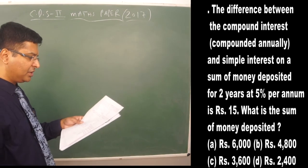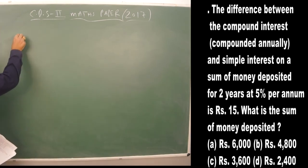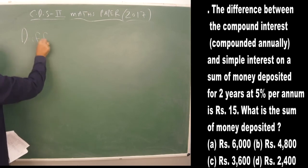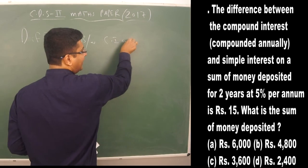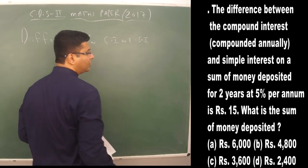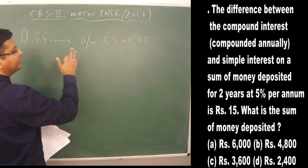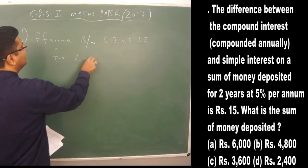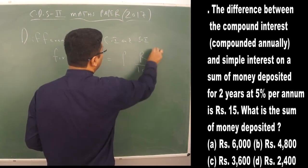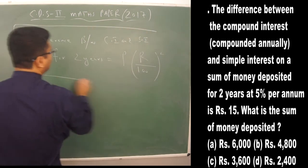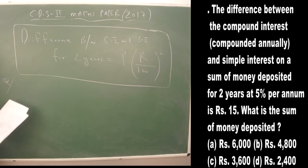The next question is from CI and SI. The key formula: when finding the difference between compound interest and simple interest for two years, the result is always P × (r/100)².